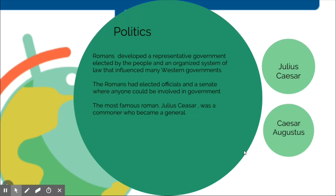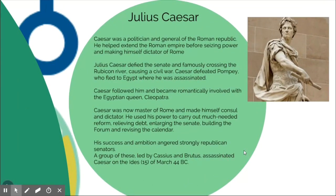The most famous Roman was Julius Caesar, a commoner who rose to power and became a general. Caesar was a politician and general who eventually declared himself dictator of Rome. He defied the Senate and famously crossed the Rubicon River when told not to enter Roman territory. He was exiled but defied them anyway, caused a civil war, defeated Pompey — who fled to Egypt where he was assassinated — and Caesar followed, becoming romantically involved with Cleopatra.